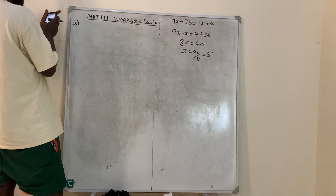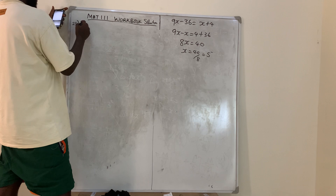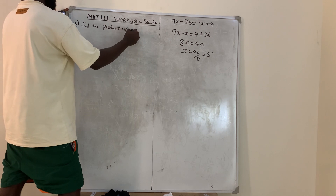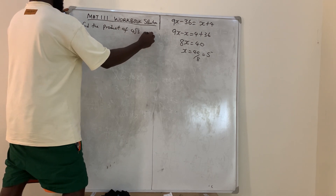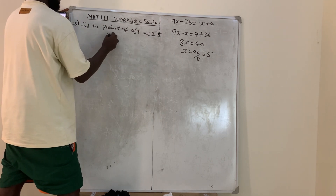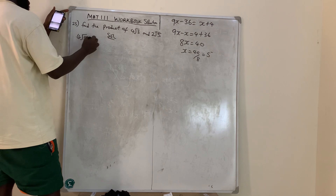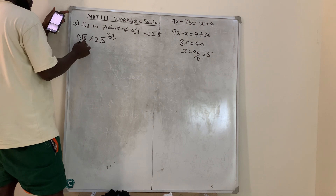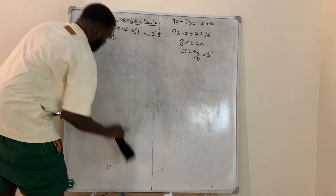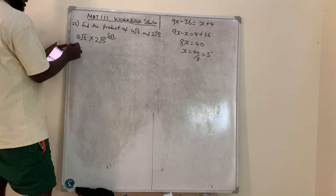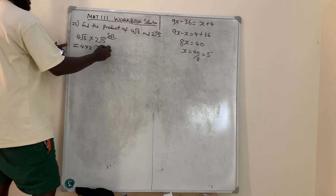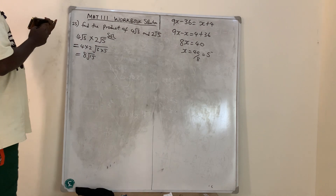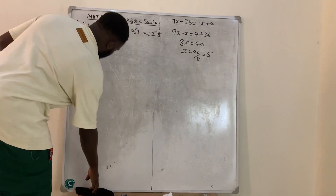Question number 23 says: find the product of 4√3 and 2√5. Product means multiply, so we have 4√3 × 2√5. The numbers outside multiply the numbers outside, and the numbers inside multiply the numbers inside. So 4 × 2 = 8, and √3 × √5 = √15, giving the answer 8√15.